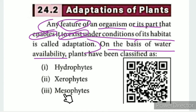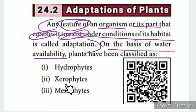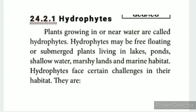Plants are classified into three types: Hydrophytes, Xerophytes, and Mesophytes. 'Hydro' means water and 'phytes' means plant — so hydrophytes are water plants. 'Xero' means nothing or dry, so xerophytes are plants adapted to dry conditions.